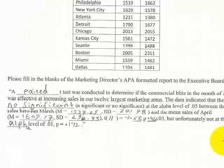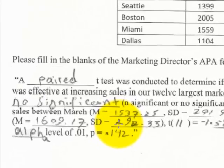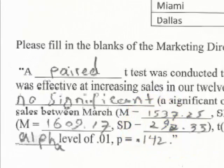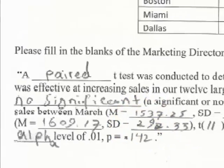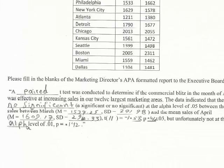This is the one where your data was — I'm assuming — input wrong, or you must have clicked a button or something wrong, because you got a different output than I did. In my test it was significant; your test, you got no significance. So I'm going to have to knock off a few points for this one.